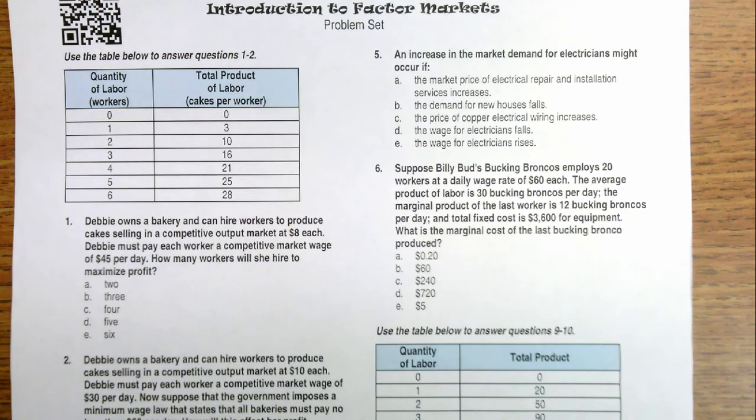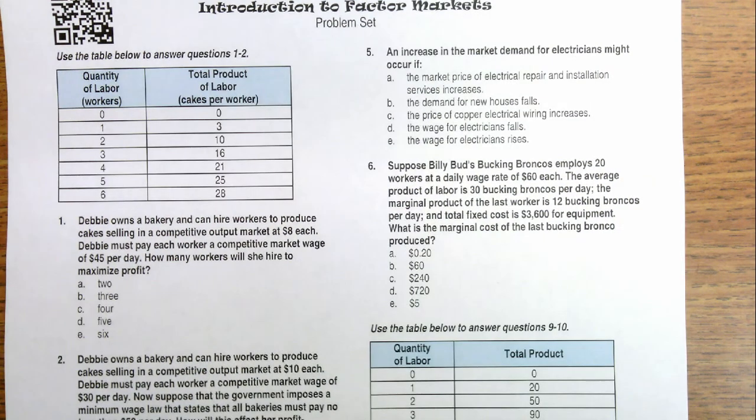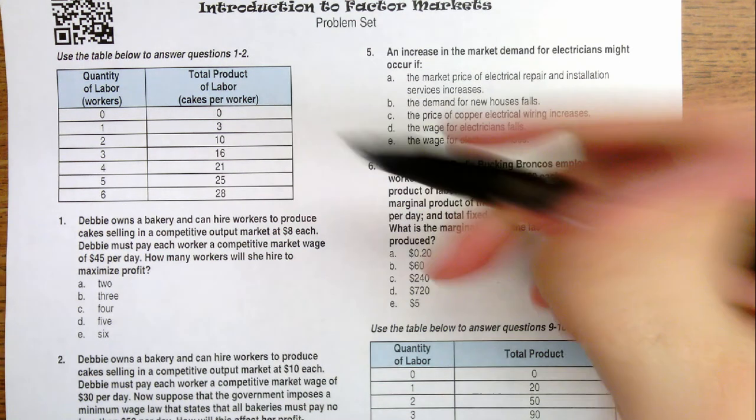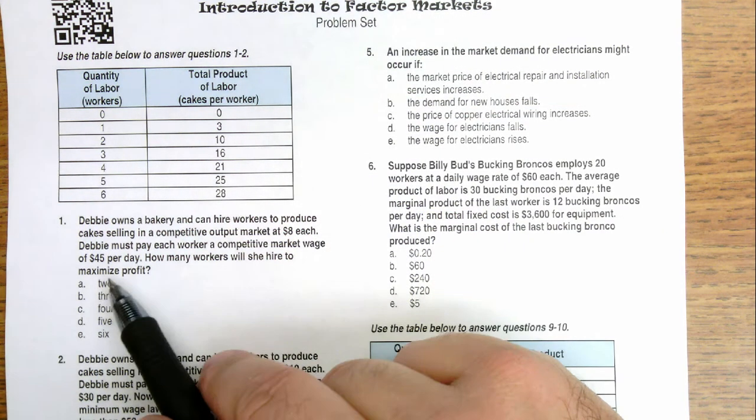This question is asking us to identify how many workers Debbie should hire in her little bakery, assuming that she can sell her products at $8 a piece and each worker costs her $45.